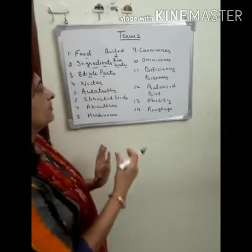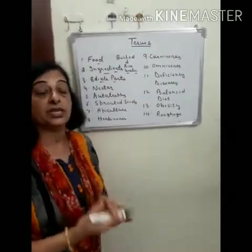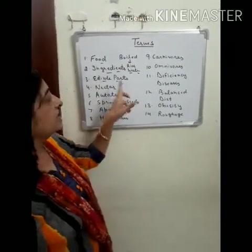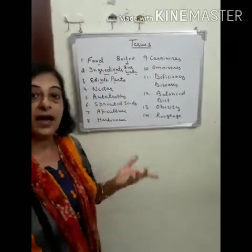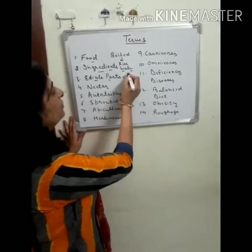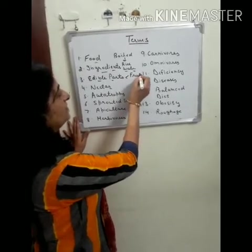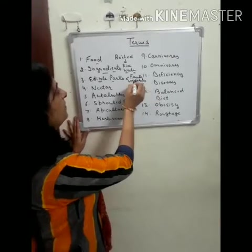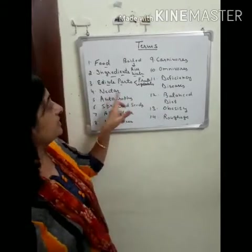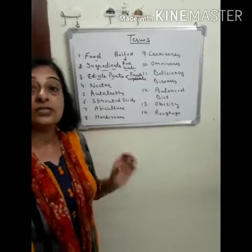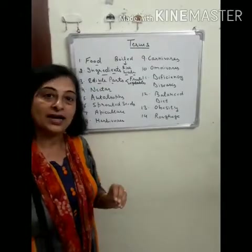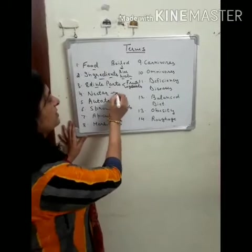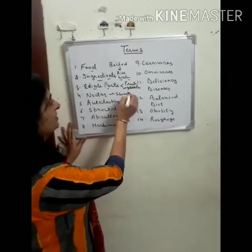Next, edible parts — the parts of a plant which we can eat, such as fruits and vegetables, are known as edible parts. Next, nectar — sweet juices of flowers are known as nectar.